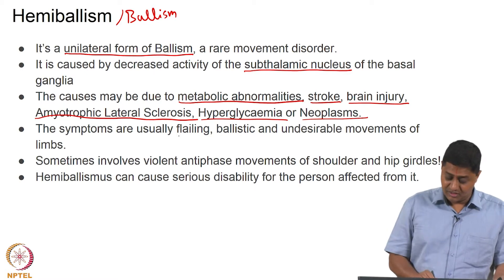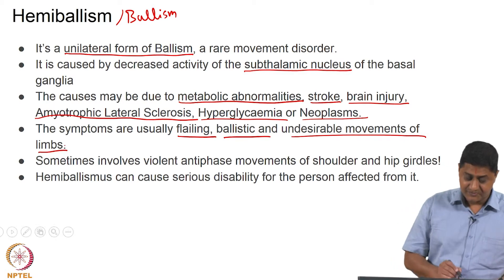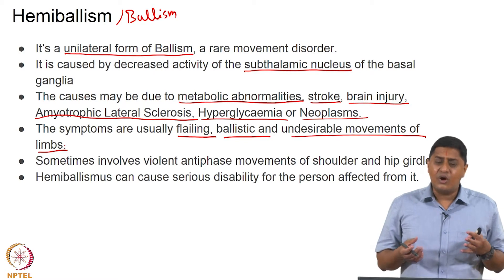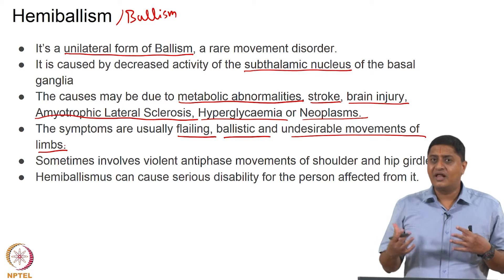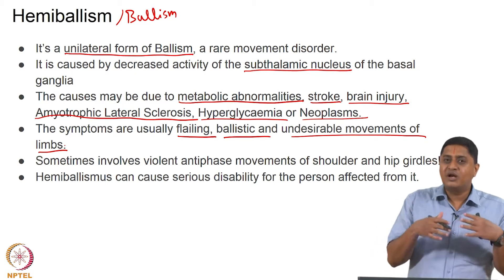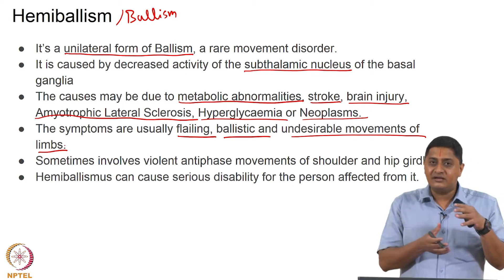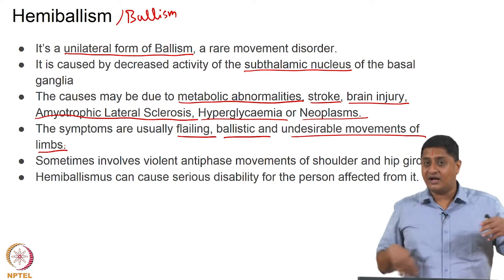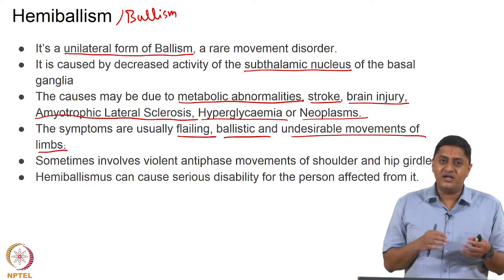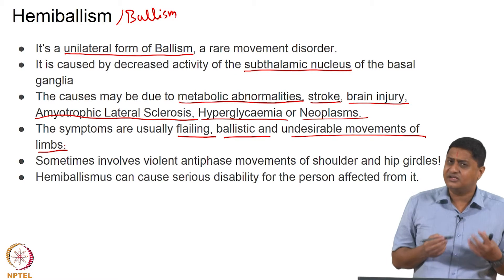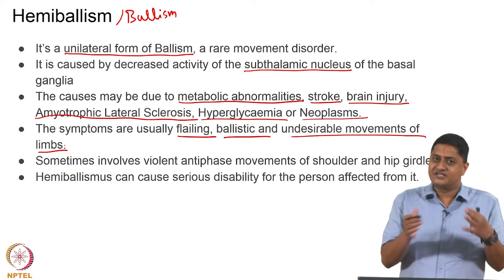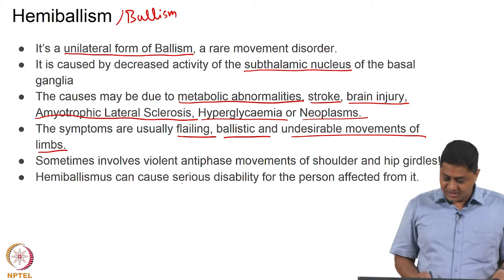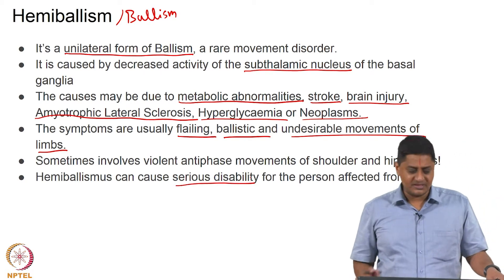The symptoms are flailing, ballistic, and undesirable movements of the limbs. Ballism and hemiballism involve violent out-of-phase movements between the shoulder girdle and the hip girdle — like violent, very fast out-of-phase movements you might see in Bollywood dance. This leads to very violent and unwanted movements, creating serious disability for patients affected by this particular disease.